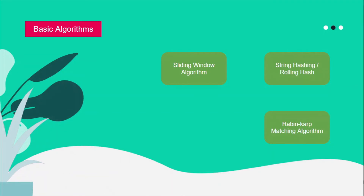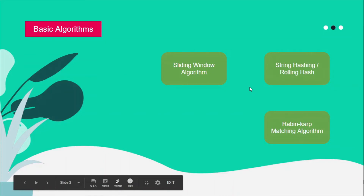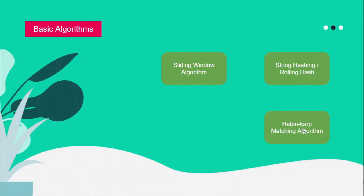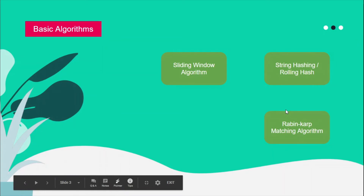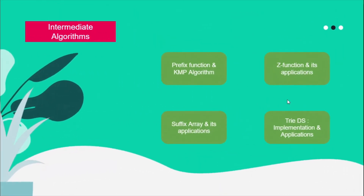Back to the lecture — some of you might be thinking why I've kept the Rabin-Karp matching algorithm in basic and not in intermediate level. The reason is, once you have knowledge of string hashing, which is very easy if you know modular arithmetic and modular inverse, Rabin-Karp becomes the easiest thing to implement. When we learn it, you'll see it's actually quite easy, which is why I've kept it in basic algorithms.